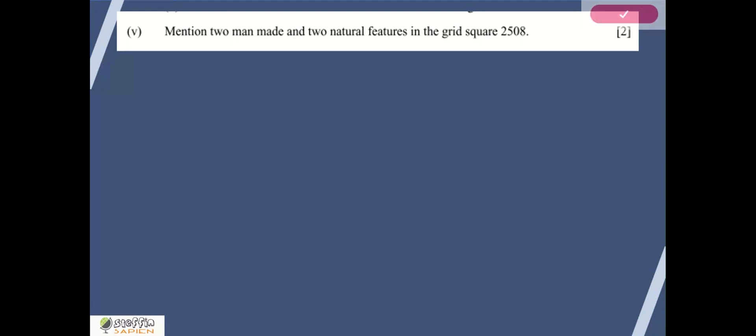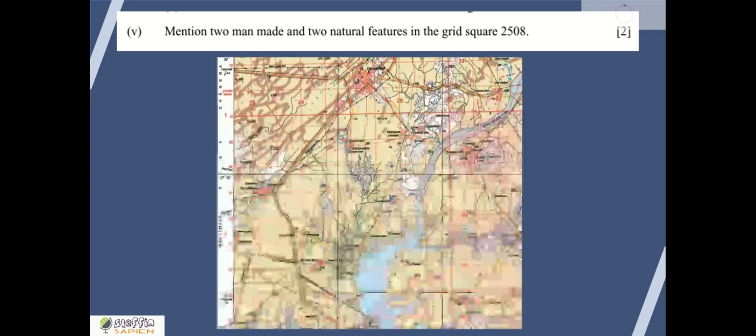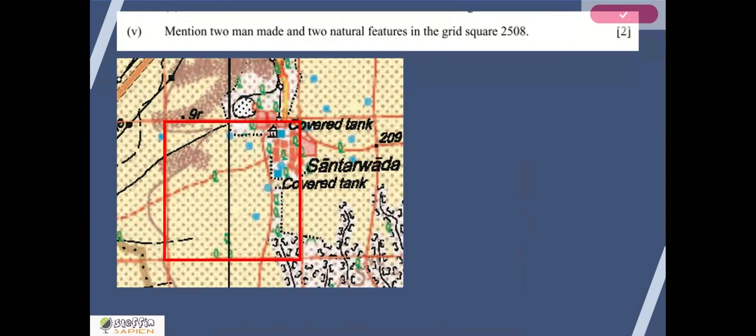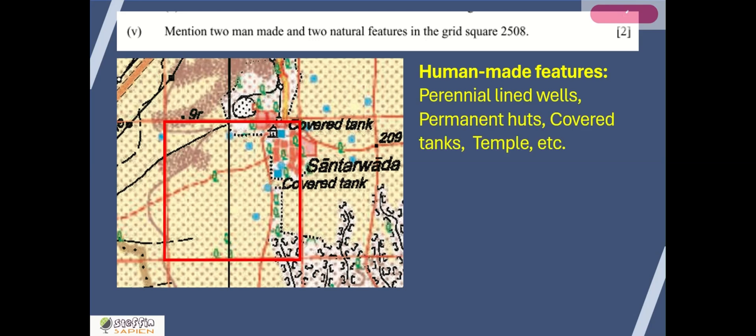The fifth and final question: Mention two man-made and two natural features in grid square 2508. Let's locate it. This is 2508. With the help of conventional signs and symbols, we can easily identify man-made features as well as natural features. Human-made features include perennial lined wells, permanent huts shown as red squares, covered tanks, and a temple. All these are examples of human-made features. We can write any two.